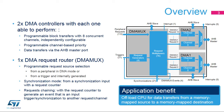The STM32G4 DMA features two DMA controllers. For each DMA controller, it is possible to do programmable block transfers with eight concurrent channels, each independently configurable, and programmable channel-based priorities. Data transfers occur via the AHB master port connected to the bus matrix. There is also a DMA Request Router, or DMA-MUX, with programmable request source selection, either from a peripheral in DMA mode or from a trigger and then internally generated.